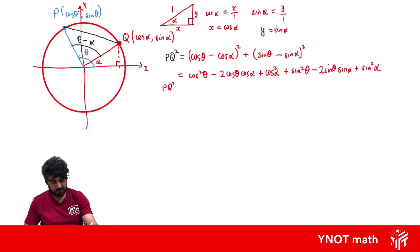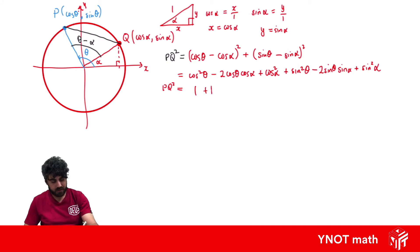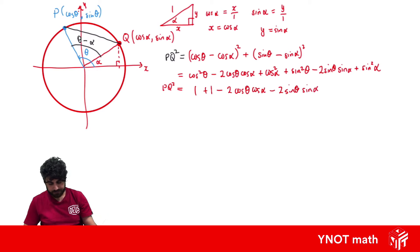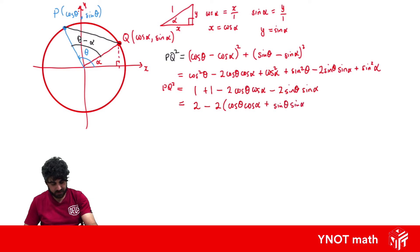We can tidy this up because cos²θ plus sin²θ equals 1, and cos²α plus sin²α also equals 1, giving us 1 plus 1 equals 2. Then we have minus 2 cos θ cos α minus 2 sin θ sin α, so factoring out negative 2 gives us 2 minus 2(cos θ cos α plus sin θ sin α).